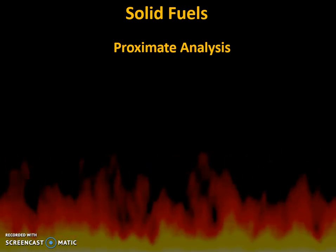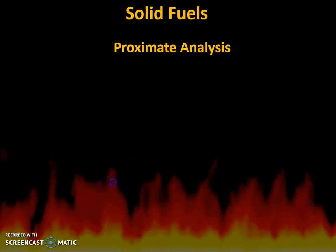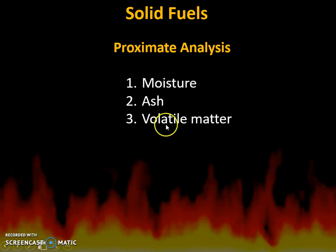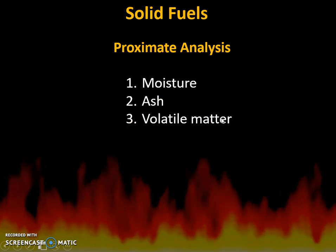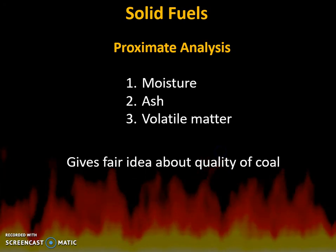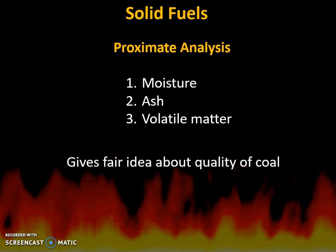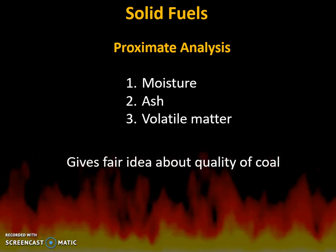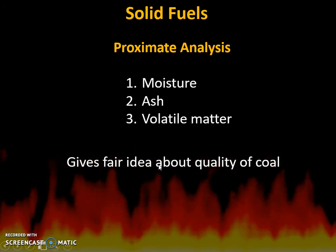The first is proximate analysis. This includes the analysis of percentage moisture, percentage ash, and percentage volatile matter. It also includes the percentage of fixed carbon present in coal. This proximate analysis is an approximately done analysis, and it gives a fair idea about the quality of coal.